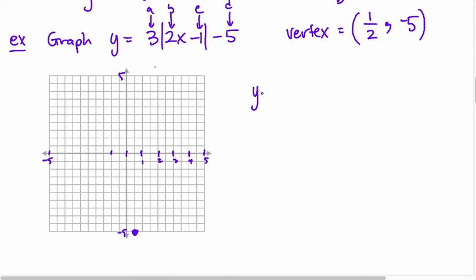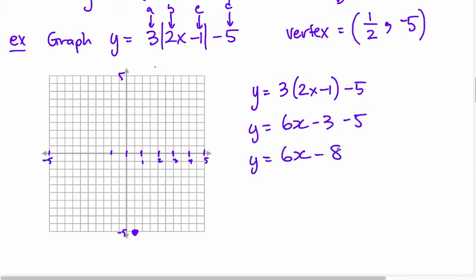What I want to do is graph y equals 3 times 2x minus 1 minus 5, which is y equals 6x minus 3 minus 5, or y equals 6x minus 8. What you really need to know is that the slope of this line you're graphing is 6. So that means if I go up 1, 2, 3, 4, 5, 6, I go over 1. Up 1, 2, 3, 4, 5, 6, over 1. I just continue this pattern: 1, 2, 3, 4, 5, 6, over 1, and I get a v-shape.